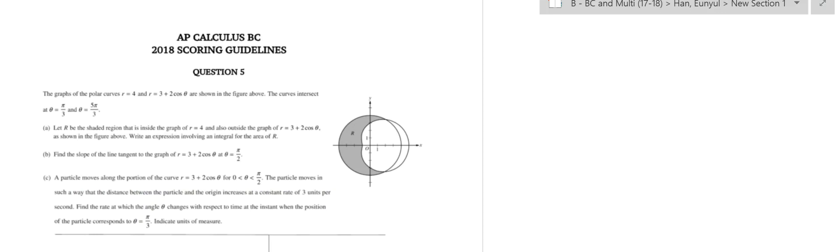Today's problem is question 5 from the 2018 AP Calculus BC free response questions. Part A: Let R be the shaded region that is inside the graph of r equals 4 and also outside the graph of r equals 3 plus 2 cosine theta, as shown in the figure above. Write an expression involving an integral for the area of R.